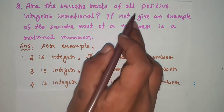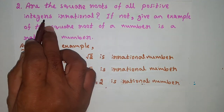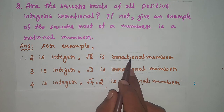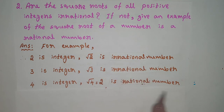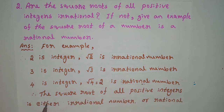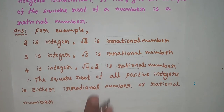So the square root of a positive integer can be either an irrational number or a rational number. For example, root 1 equals 1, which is a rational number. Therefore, the square roots of all positive integers are not necessarily irrational — this is false.